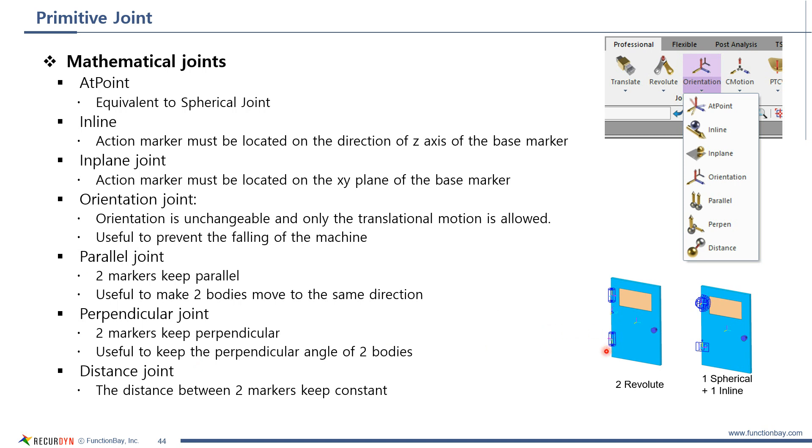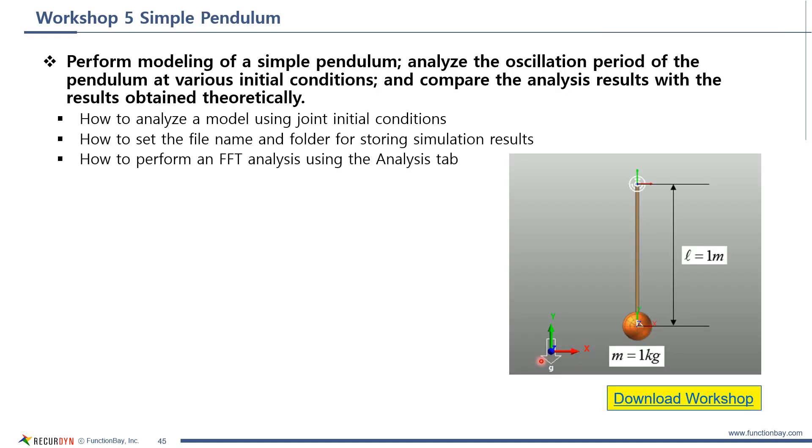This is the example of using primitive joints. Instead of two regular joints, one spherical joint and one inline joint are used. This is workshop 5. You can use joint in this workshop.